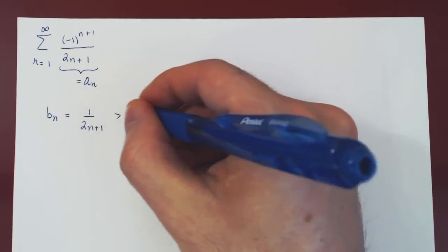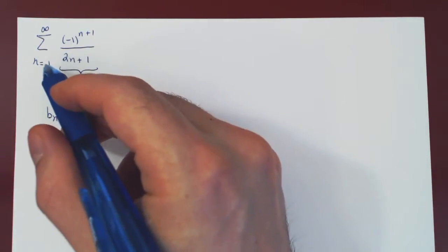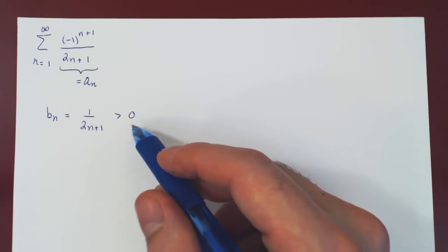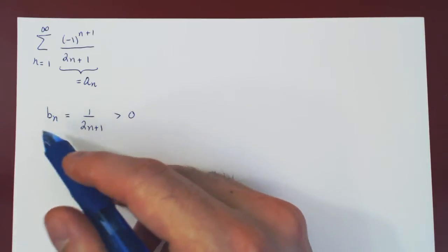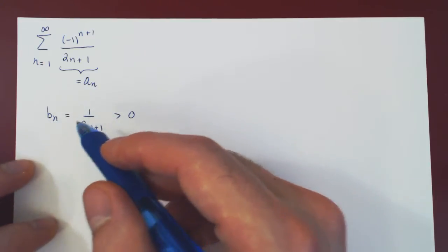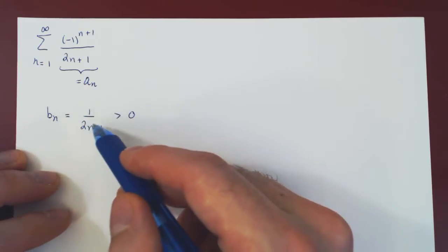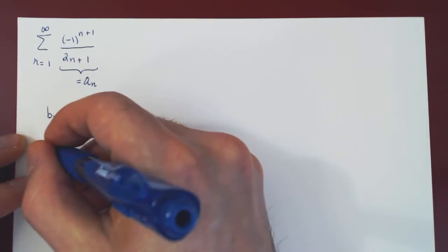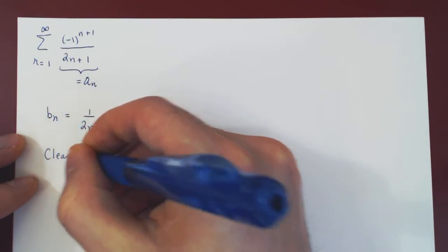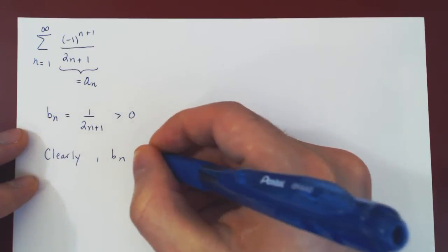This is clearly positive as n goes from 1 to infinity, and we have to verify that Bn satisfies two conditions. One, that Bn is eventually decreasing, but this is clear as Bn is 1 over an increasing function, so it is automatically decreasing. Clearly, Bn is decreasing.